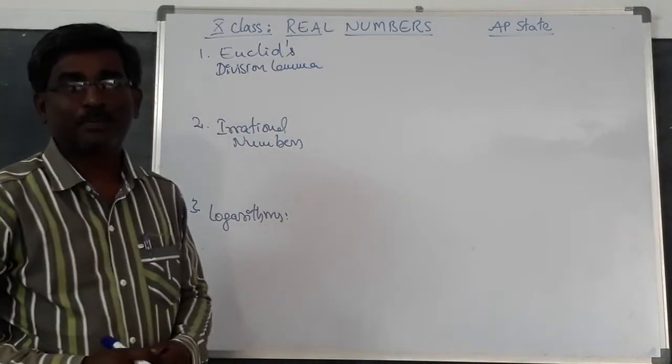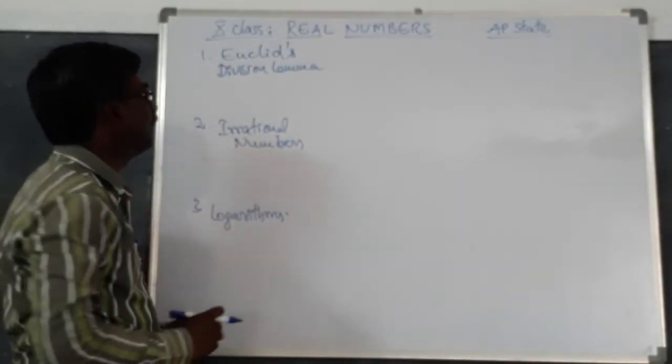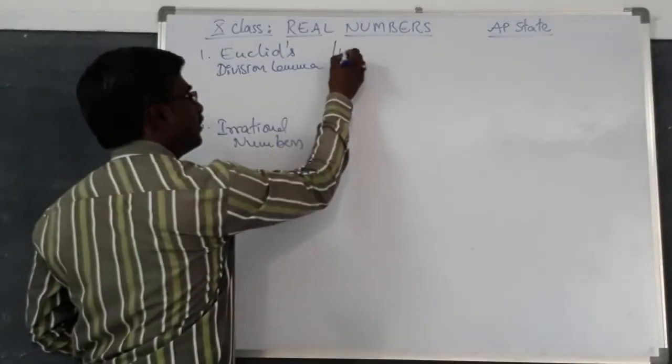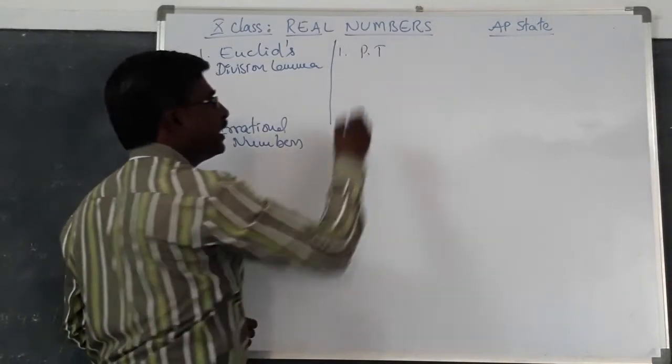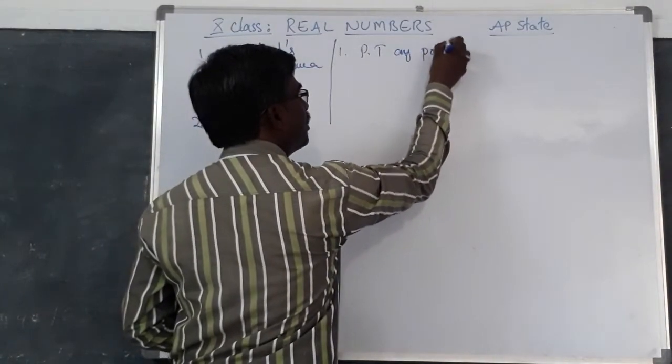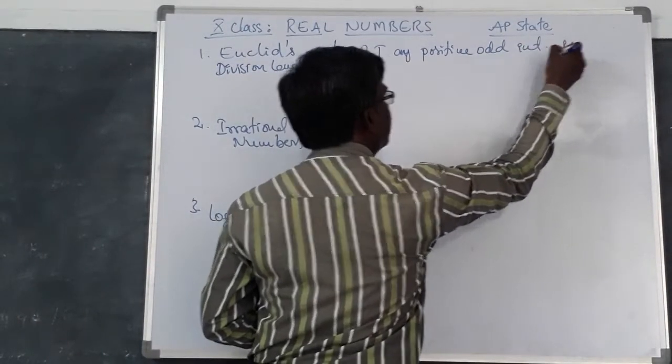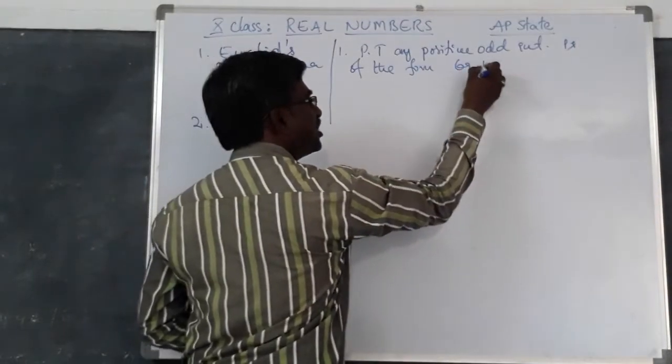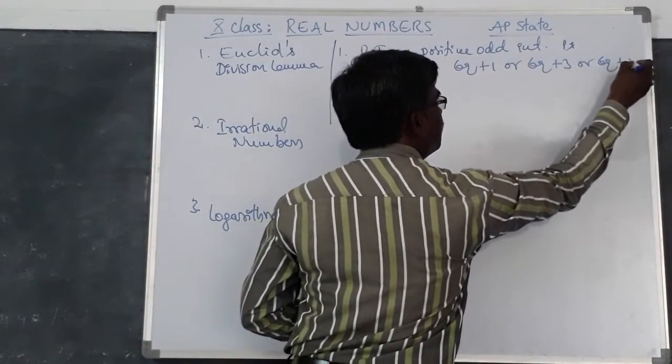Now, let us have a look about the important concepts of these three. In Euclid's Division Lemma, here we have some problems in which we prove that any positive integer is of the form 6q plus 1 or 6q plus 3 or 6q plus 5.